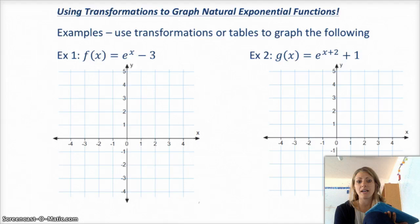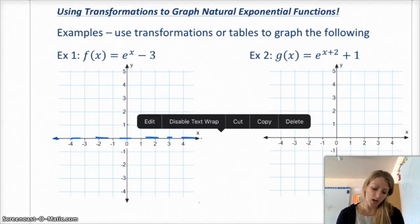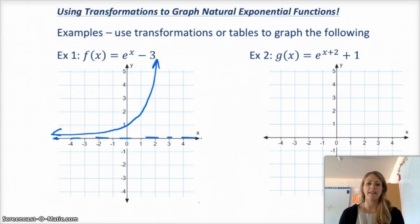Okay, just like we've used transformations in the past, you can use transformations to graph the natural exponential function. So, if we know that e to the x looks like, you know, it's got your asymptote at the x-axis, and it goes through the point 0 comma 1, and it goes through the point 1 comma 2.7, right, that's e to the x.